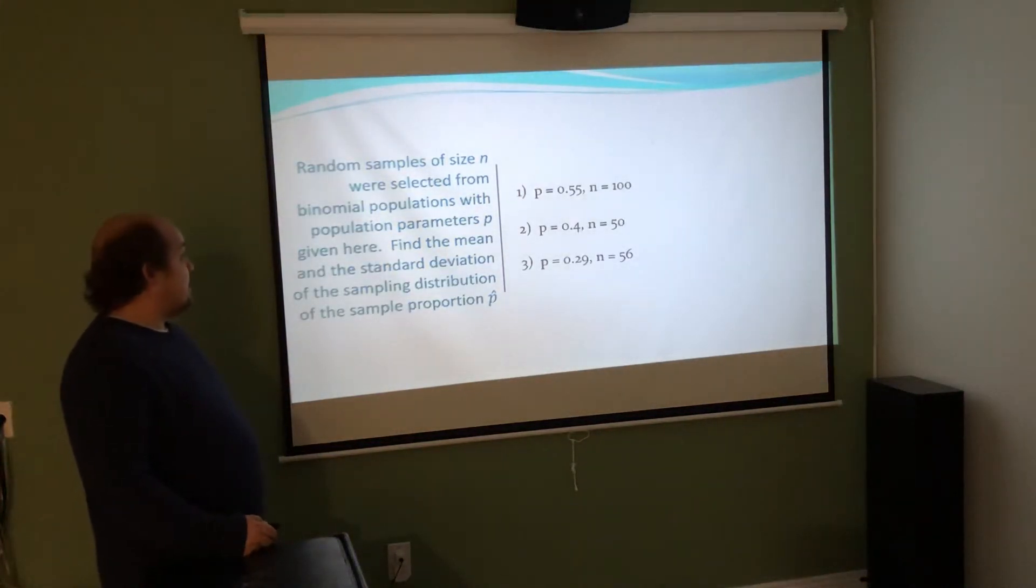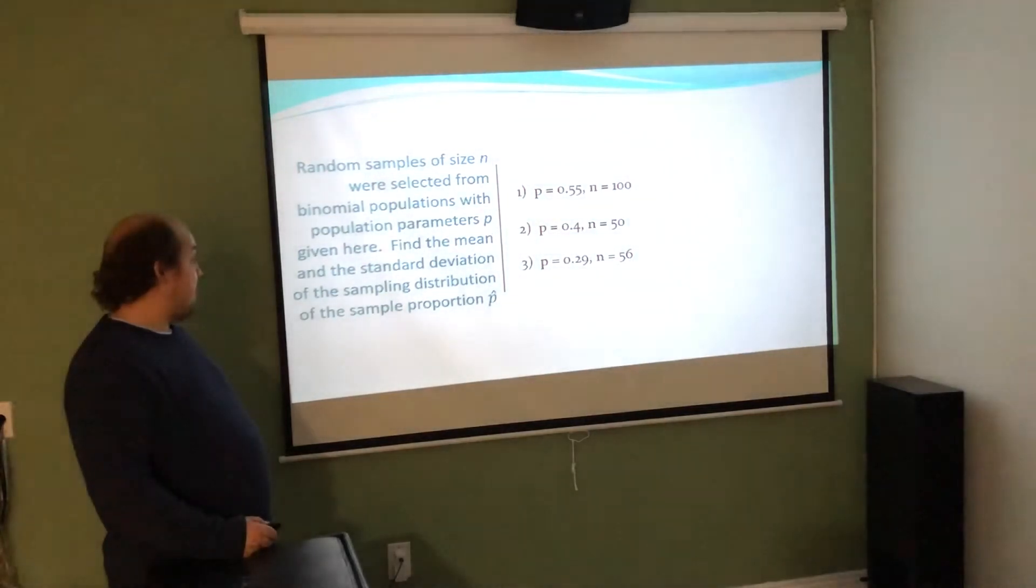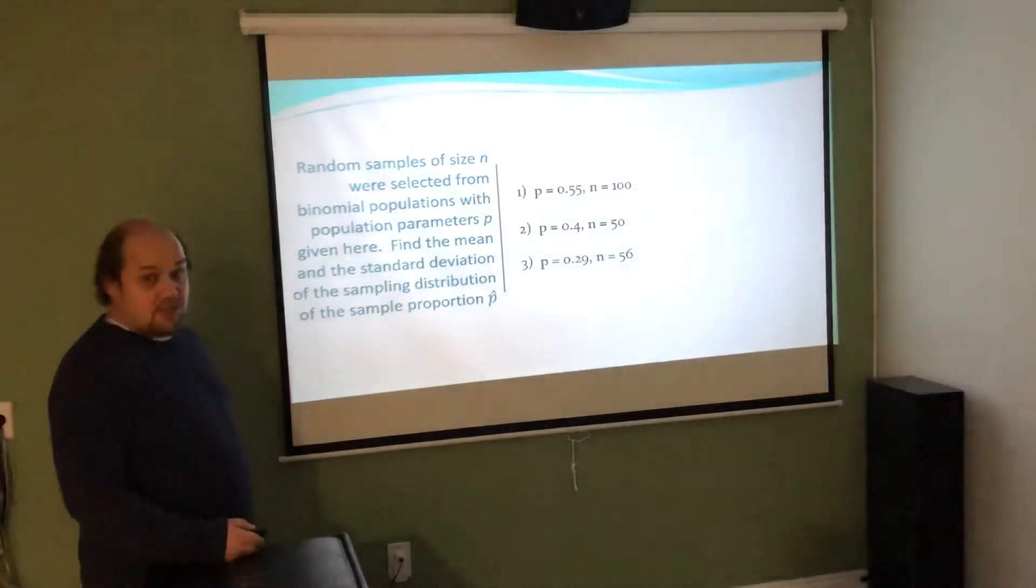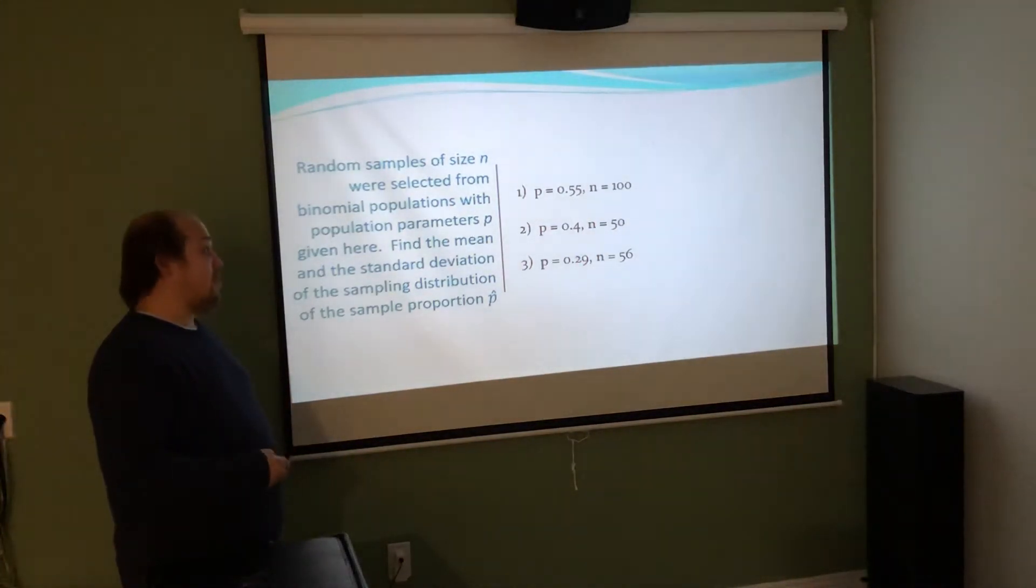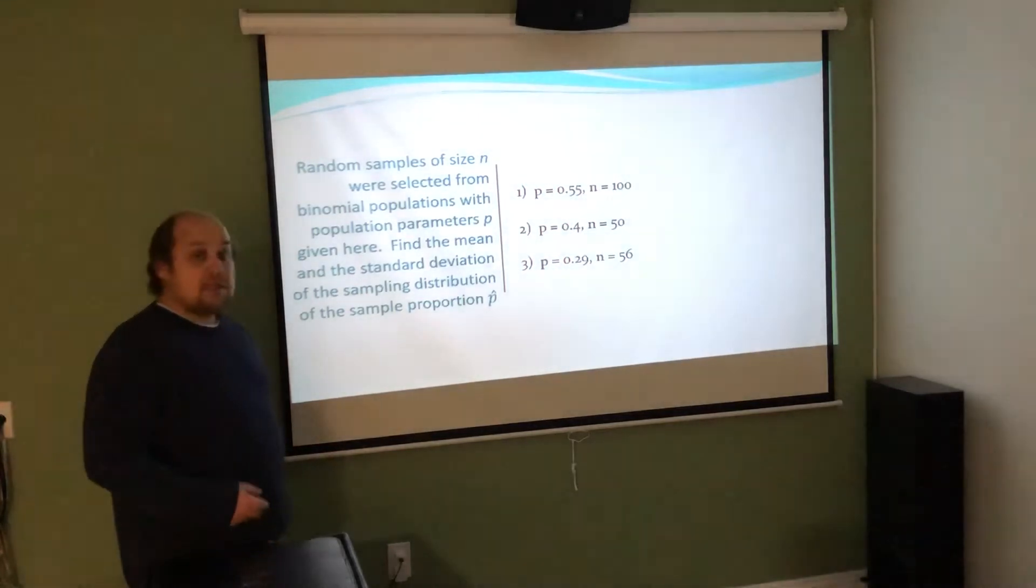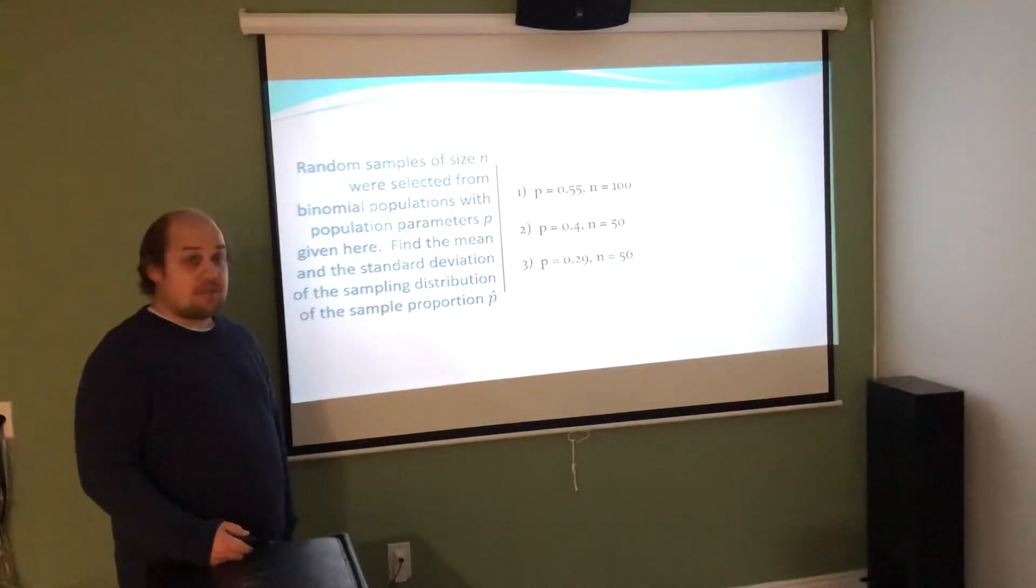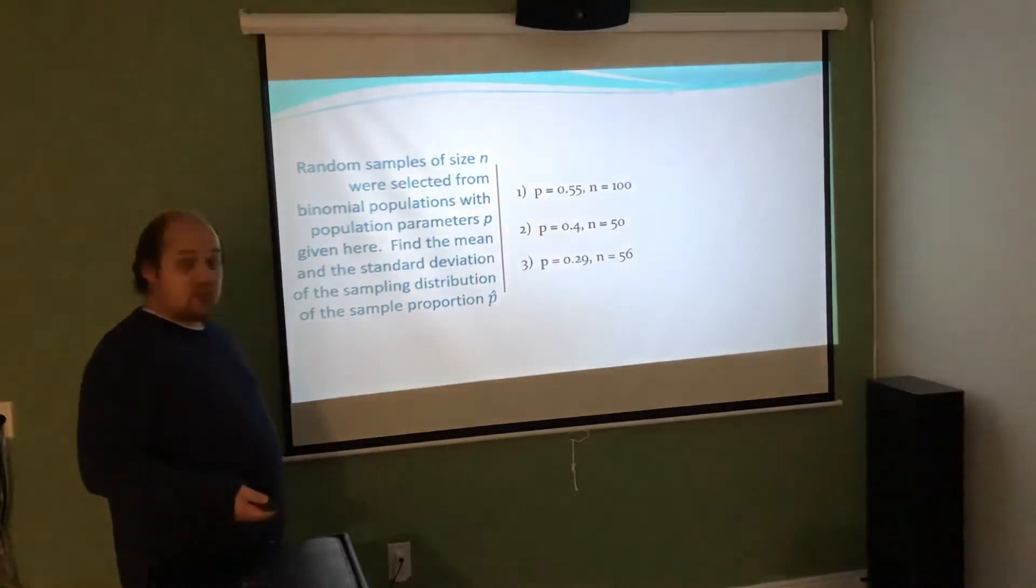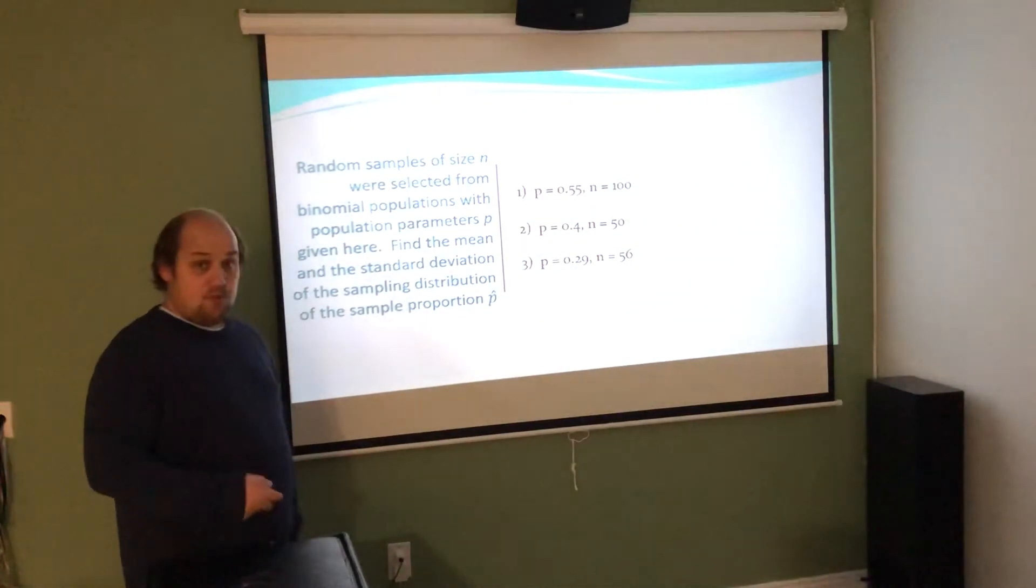Random samples of size N were selected from binomial populations with population parameters p given. Find the mean and standard deviation of the sampling distribution of the sample proportion p hat. Mean is really easy - it's just spitting back what these numbers are. So mu sub p hat for 1 is 0.55, for 2 is 0.4, and for 3 is 0.29. A little trickier to find sigma sub p hat.